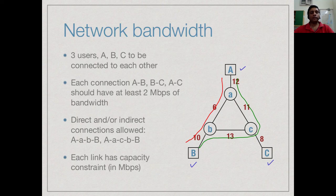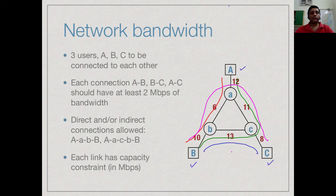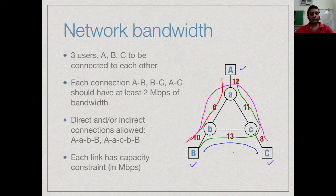Similarly there will be, for example, a direct route from B to C and an indirect route that goes like this. For each pair there is a direct route and an indirect route. As long as a combination of the capacities of the direct and indirect routes add up to at least 2 Mbps our customers are satisfied.